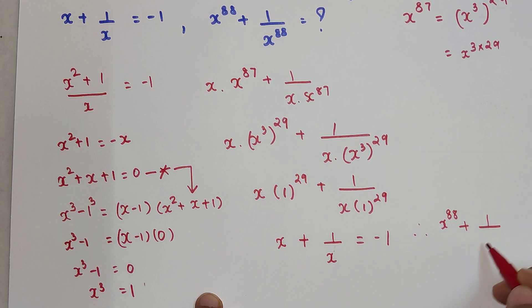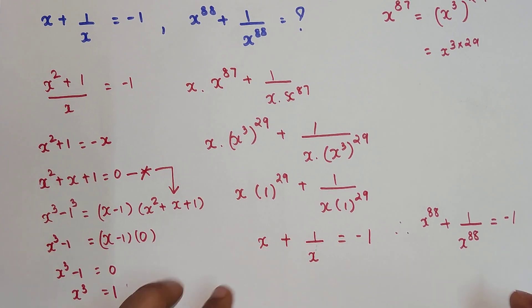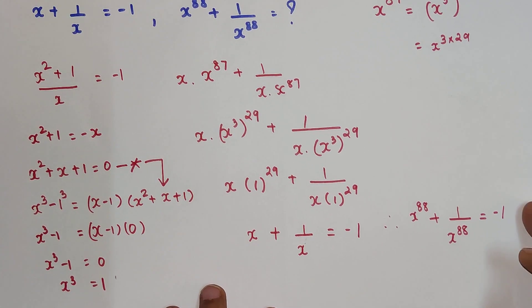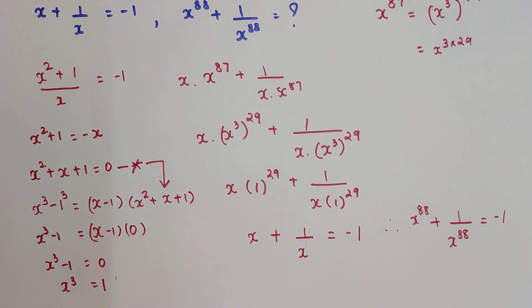Therefore I can say x^88 + 1/x^88 = -1. So you understood how to solve these kind of questions. If you have any other doubts, then please let me know in the comment section. That's it for today, I will see you in the next video.